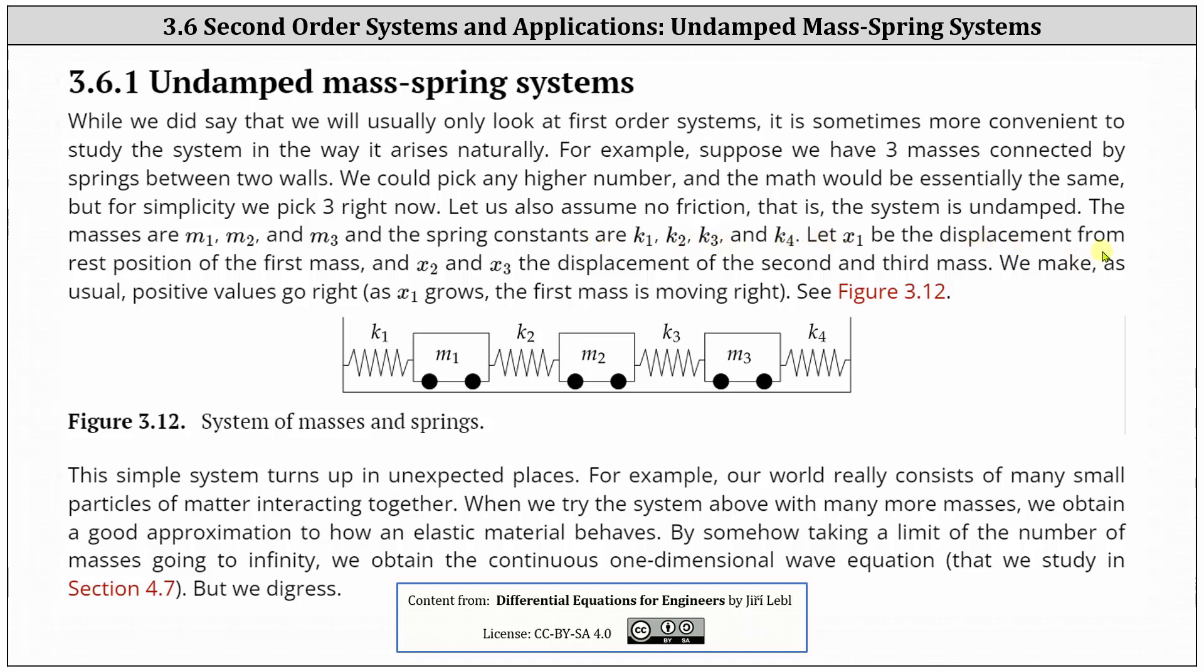Let X1 be the displacement from rest position for the first mass, and X2 and X3 the displacement of the second and third mass. We make, as usual, positive values go right. As X1 grows, the first mass is moving right.